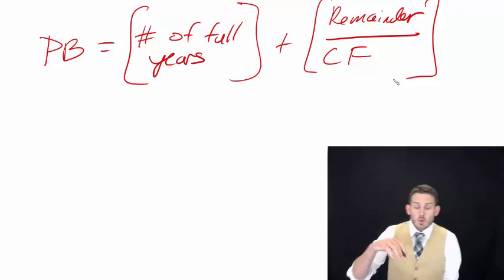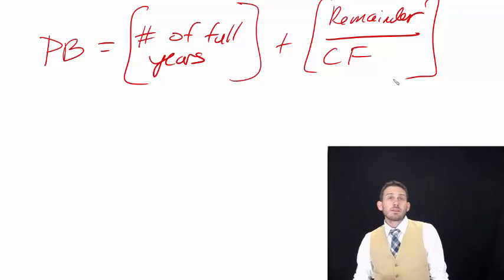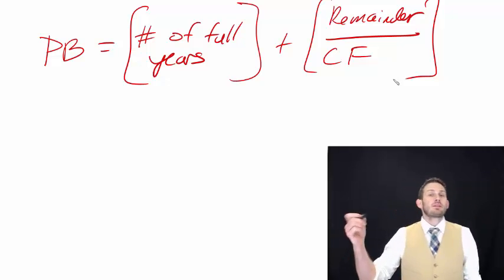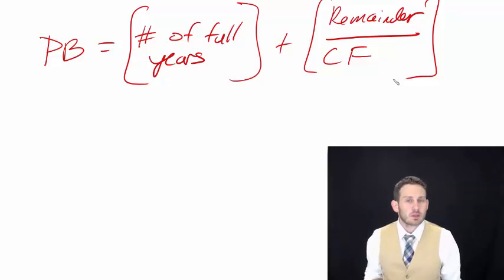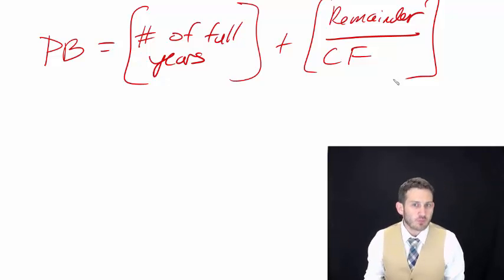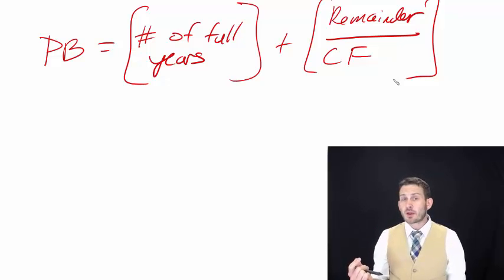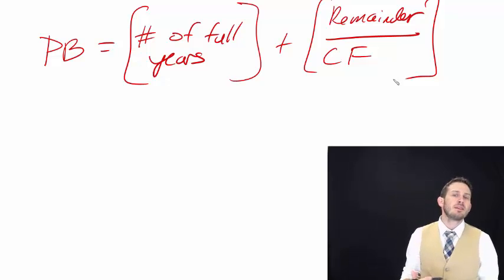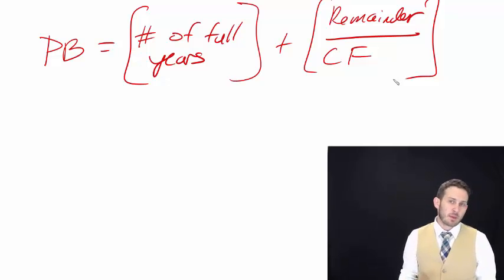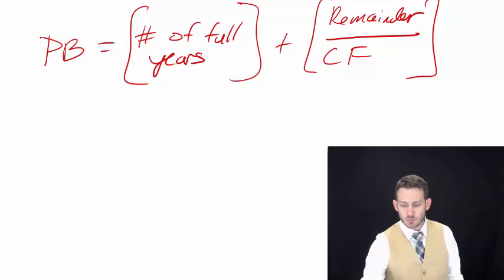When looking at this, we're going to use what we consider a waterfall method. We have two different ways we can look at this: one is the traditional payback period, and the second is the discounted payback period.